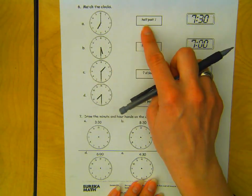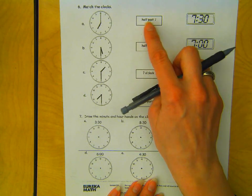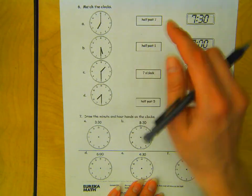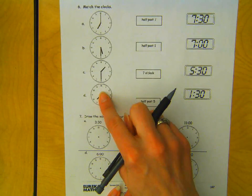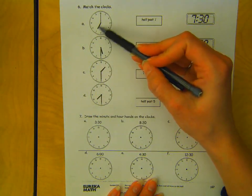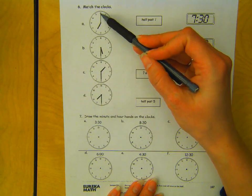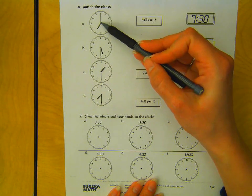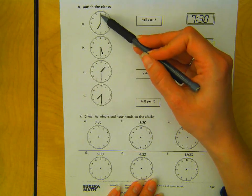So let's do the first one together. This one says half past 7. So which one of these analog clocks shows half past 7? Well, that one looks like it's not half past. Looks like it's on the o'clock hour.